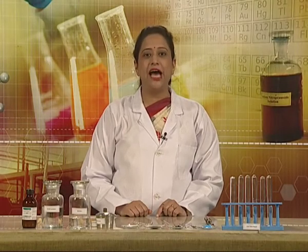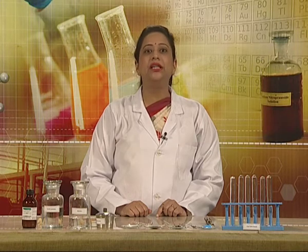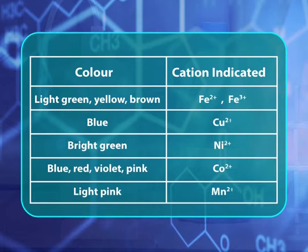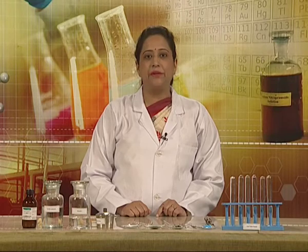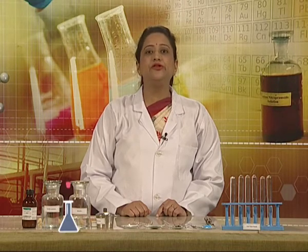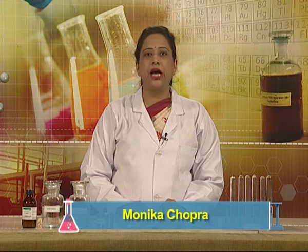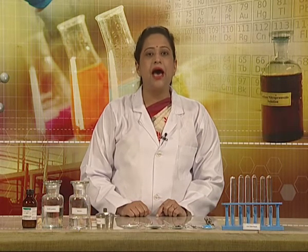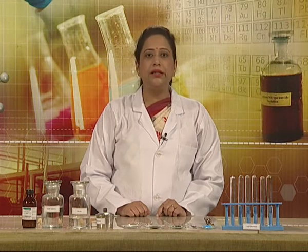To identify the cation of a salt, the first and foremost step is to do the preliminary examination to get some information about the cation when the salt is in its dry form. This is also known as dry test analysis. Preliminary examination is composed of two parts. First is to observe the color of the salt. The salts of certain cations have characteristic colors, and based on the color, some inferences can be drawn.